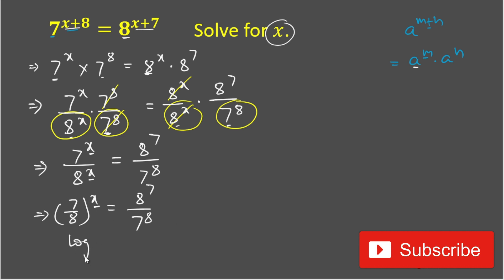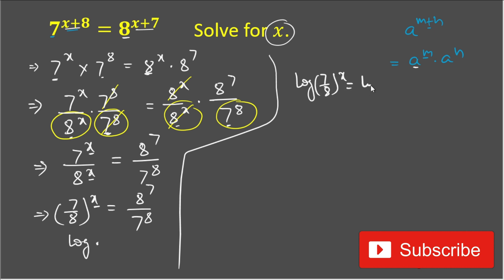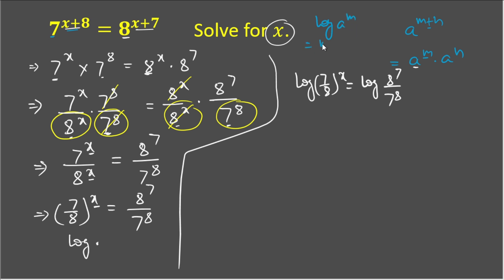For further solution of x, we will take log on both sides. Taking log of the left-hand side gives log of (7/8)^x, which equals log of (8^7 divided by 7^8). Using the rule log(a^m) = m·log(a), we can bring the exponent forward.